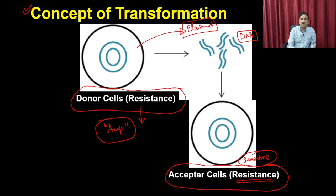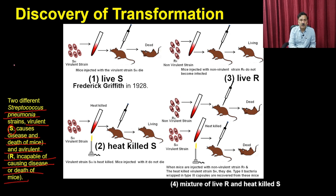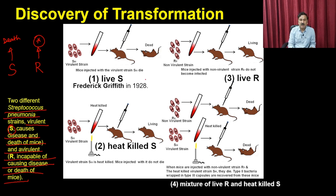How did people discover the concept of transformation? Through the classical experiment done by Griffith. He took two different types of Streptococcus pneumoniae strains: the virulent S strain, which causes disease and death in mice, and the avirulent R strain, which is incapable of causing disease or death. He performed experiments under four different conditions in 1928, discovering the concept of transformation.